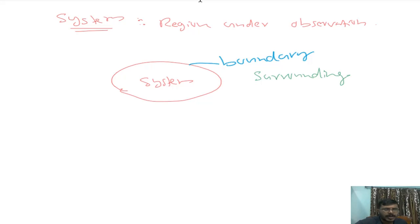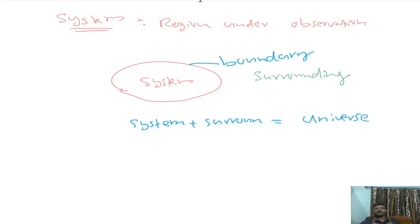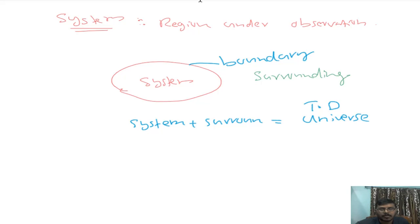If you combine the system plus surrounding, that is called the thermodynamic universe. When I say the term universe here, this is not the cosmological universe — this thermodynamic universe simply means system plus surrounding, nothing else.